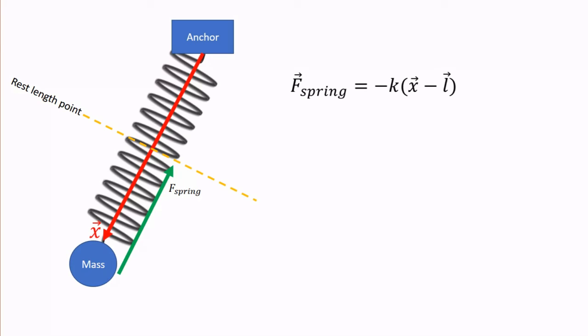Now, the x vector is the vector that points from the anchor to the mass. The l vector is the vector that points from the anchor to the rest length point on the spring. The x minus l is the vector that points from the rest length point to the mass, as can be seen here. Other than that, we have the same equation.